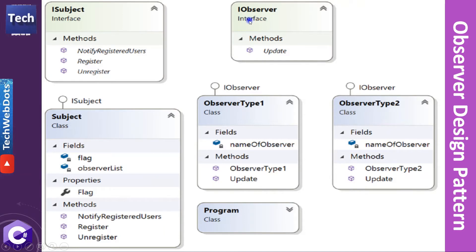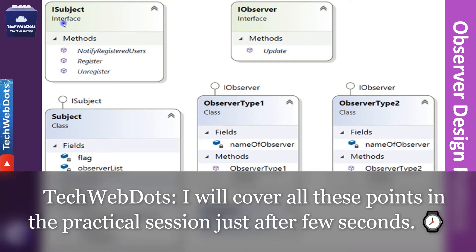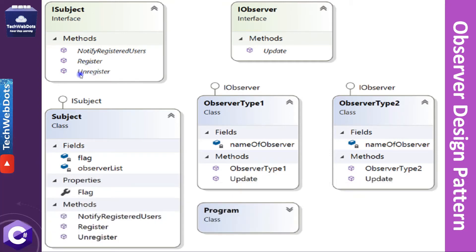Now let's look at the class diagram. We have one interface called IObserver with one method: Update. We implement IObserver in two classes — ObserverType1 and ObserverType2 — each with a name field and an Update method. On the left side, we have a Subject interface containing three methods: Register (for registering an observer), Unregister (for removing an observer), and NotifyRegisteredUser (for sending notifications to all subscribers). The Subject implementation includes all three methods plus a flag property used to demonstrate the publisher-subscriber idea.